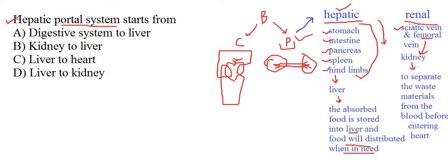Blood from these veins goes to the kidney, and from the kidney it will go into the heart where it will be purified. That is the significance of the Renal Portal System.